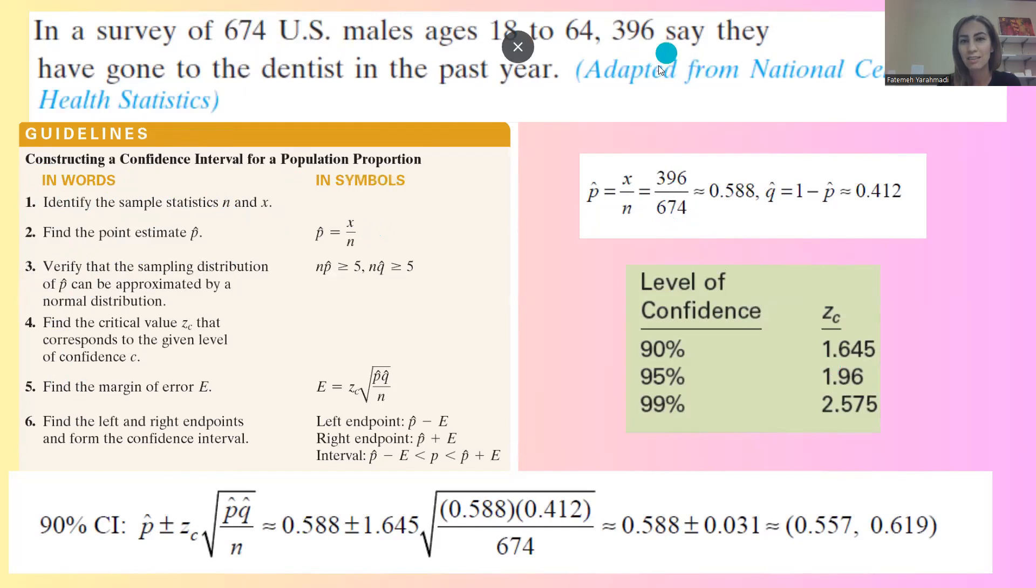396 said yes, we've gone to the dentist in the last year. So x or 396 goes on the numerator. You need to do the division, and approximately is 0.588 or 58.8% of these people went to the dentist last year.